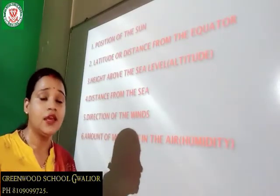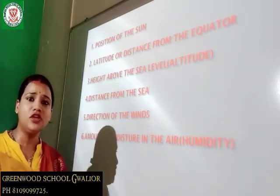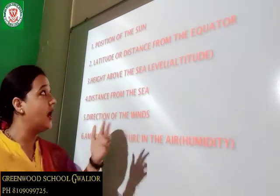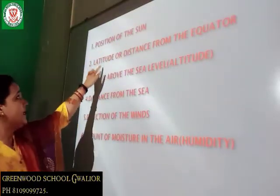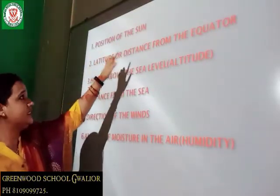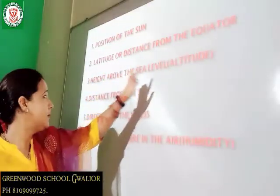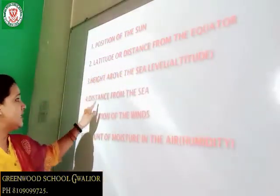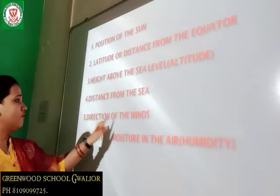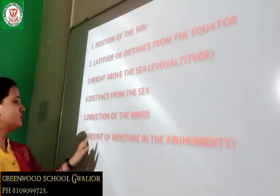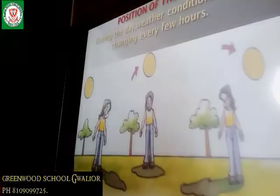There are some factors that determine the weather and climate of particular places: position of the sun, latitude or distance from the equator, height above the sea level, distance from the sea, direction of the winds, and amount of moisture in the air.